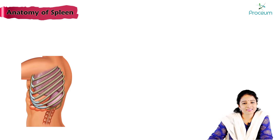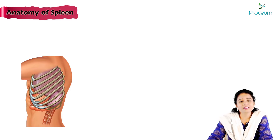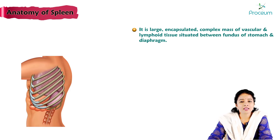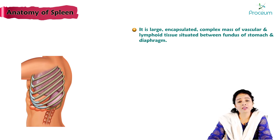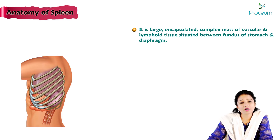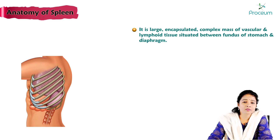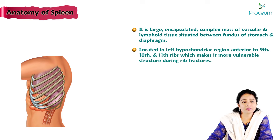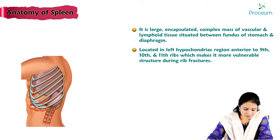Anatomy of the spleen. The spleen is the large encapsulated complex mass of vascular and lymphoid tissue situated between the fundus of the stomach and diaphragm. The spleen is located in the left hypochondriac region, anterior to the 9th, 10th, and 11th ribs.